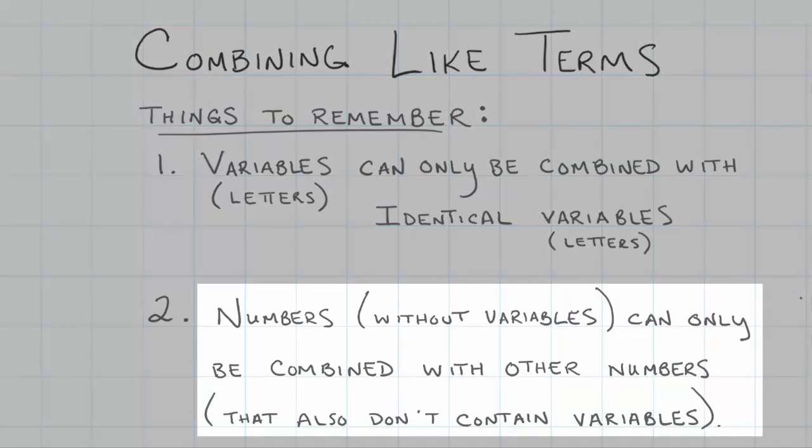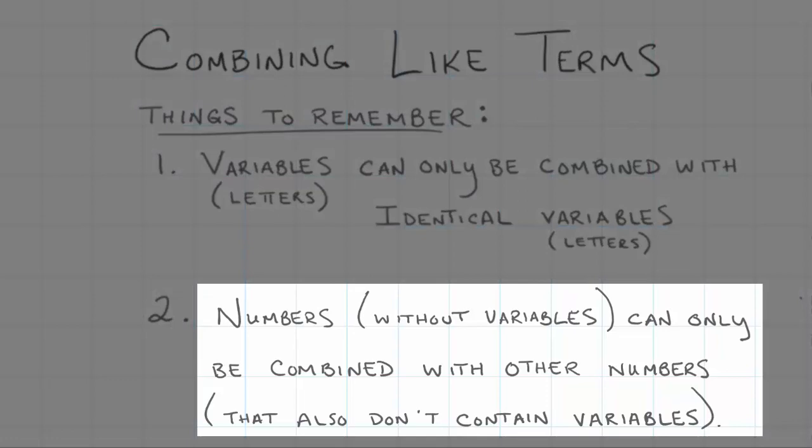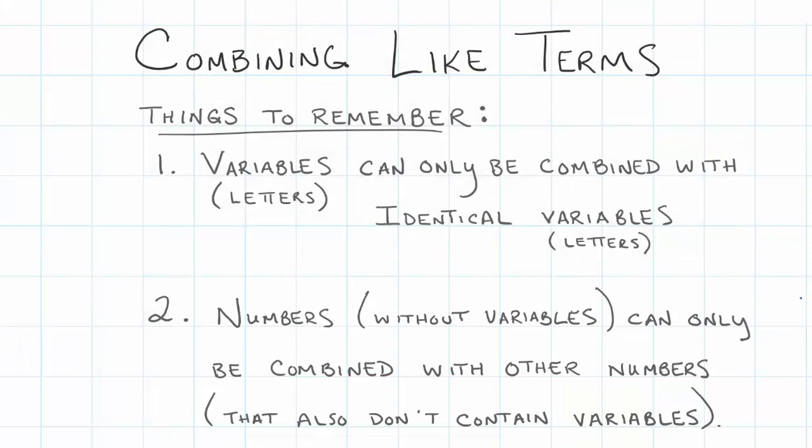The second thing I want students to remember is that numbers that don't have a variable can only be combined with other numbers that also don't contain a variable. Numbers can only go with numbers. Whether it's positive or negative it doesn't matter.